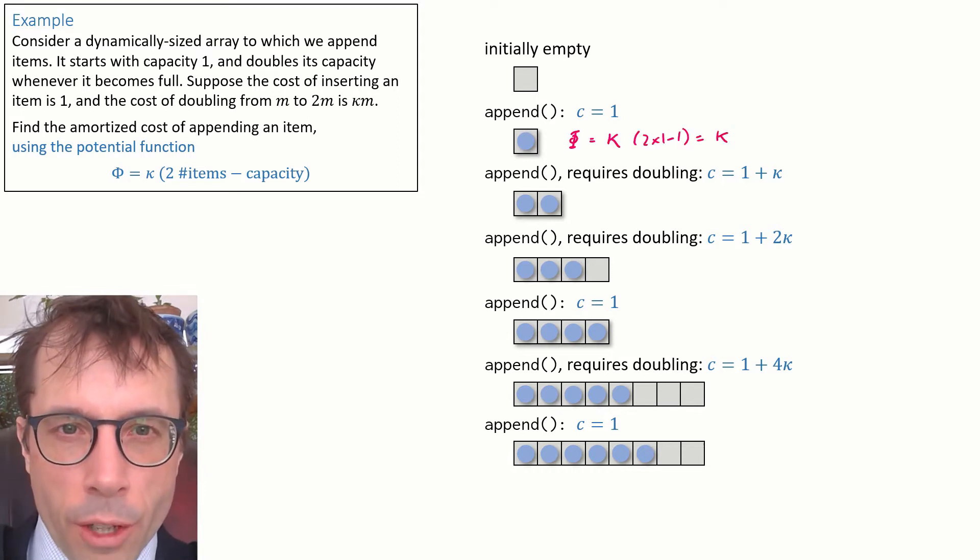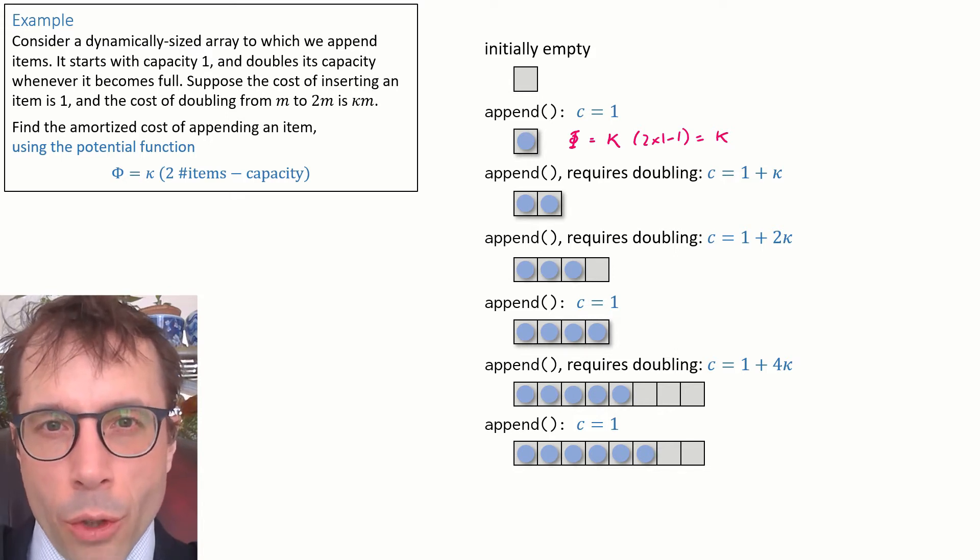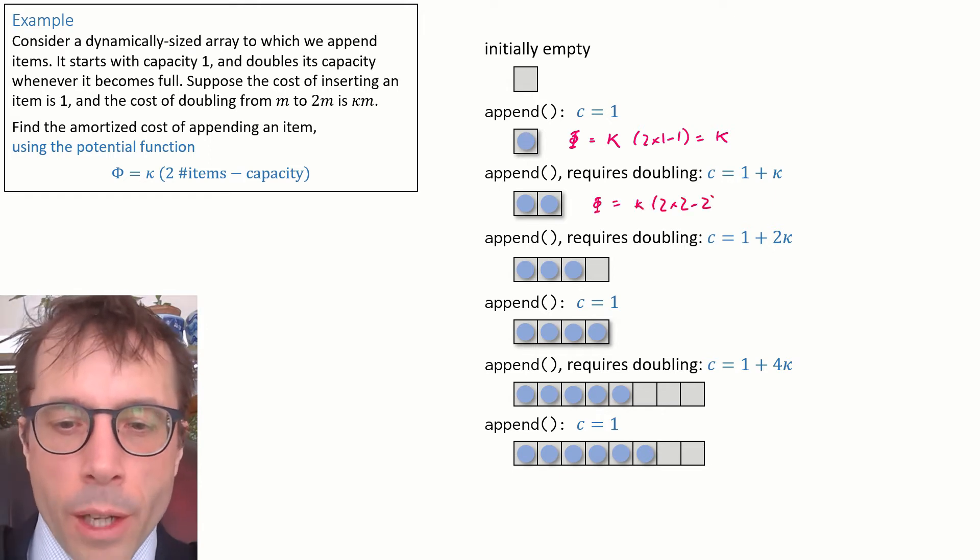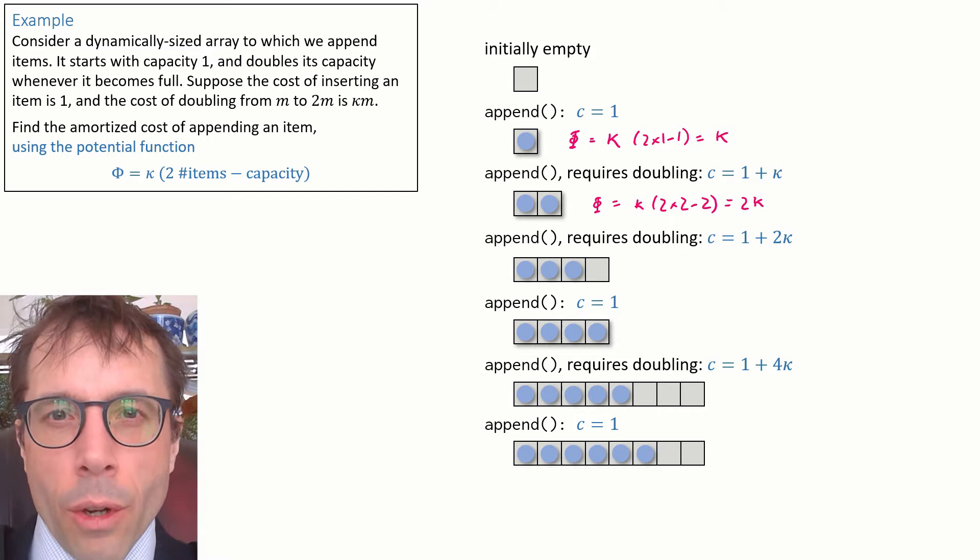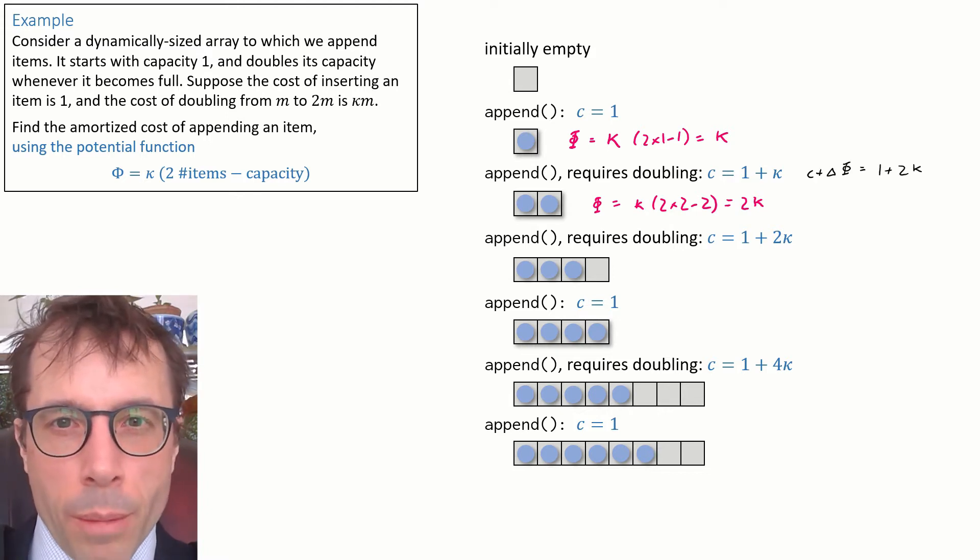After the first item is appended, phi is kappa times two times one minus one, in other words kappa. After another append, the new phi is equal to twice kappa, and so the amortized cost of this operation is C plus delta phi equals one plus two kappa. Pause the video, work out all the other potentials and amortized costs, and press play when you're ready to check your answers.